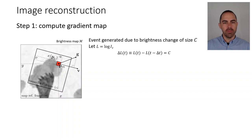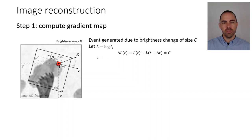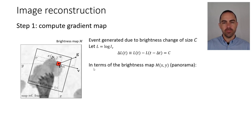Step one is to compute the gradient map. Imagine we have the following situation: the big square is the reference map or reference frame, and the smaller square is the current field of view of the camera as it's moving. We know that an event is generated because there is a brightness change of size C at a pixel. In this case we are looking at a red pixel on the image plane with coordinates u and v — u is the column index and v is the row index — and as the camera moves the intensity of this pixel changes, so we detect an event.